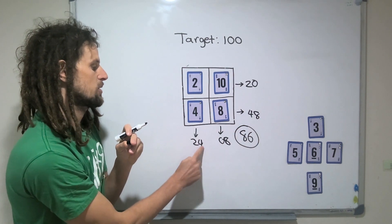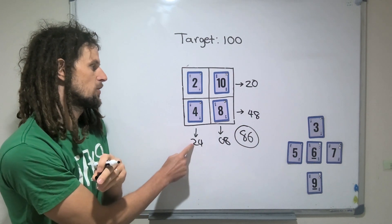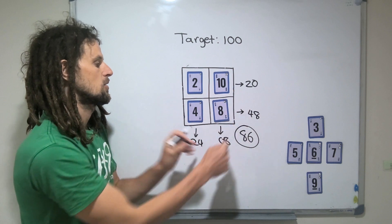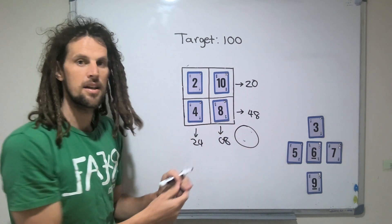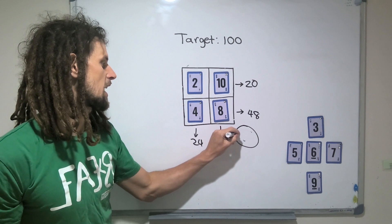8 and 8 is 16, plus 4 is 20, 40, 60, 100. And so this would be one unique solution to the target 100.